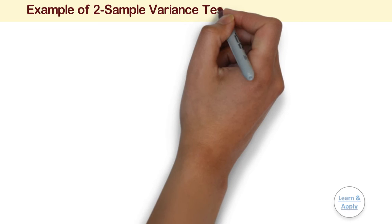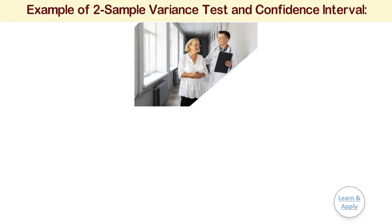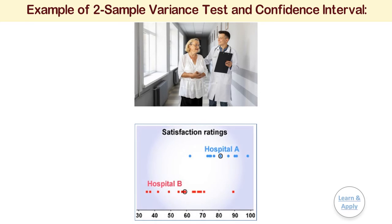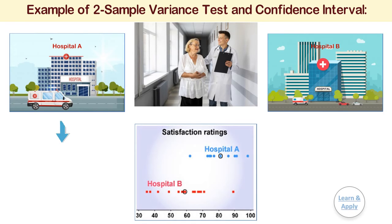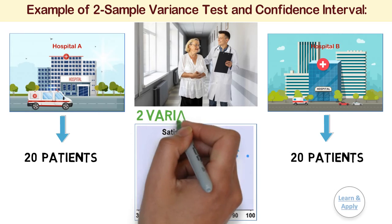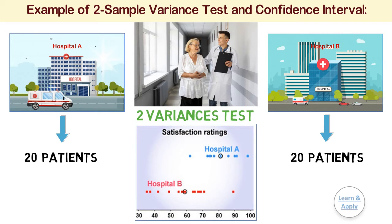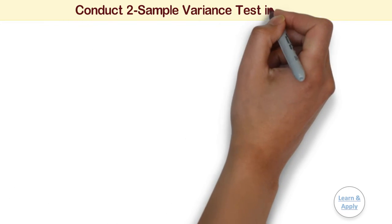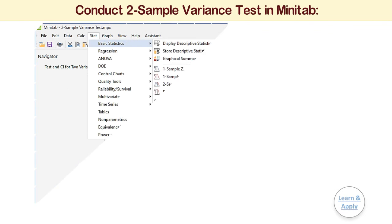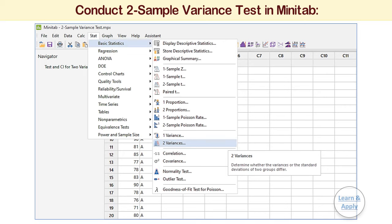Example of two-sample variance test and confidence interval. A healthcare consultant wants to compare the patient satisfaction ratings of two hospitals, collecting ratings from 20 patients for each hospital. The consultant performs a two-sample variance test to determine whether the standard deviations in patient ratings from the two hospitals are different, following the general hypothesis testing procedure. To conduct this test in Minitab, enter the collected data in the Minitab worksheet, then select Stat, Basic Statistics, and then Two Variances.